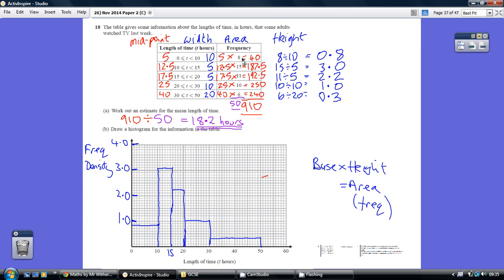We're estimating that 8 people watch TV for 5 hours, so that's 8 times 5 equals 40 hours. 15 people watch TV for 12.5 hours equals 187.5, etc. That generates all these hours here, which we add up to be 910 hours.